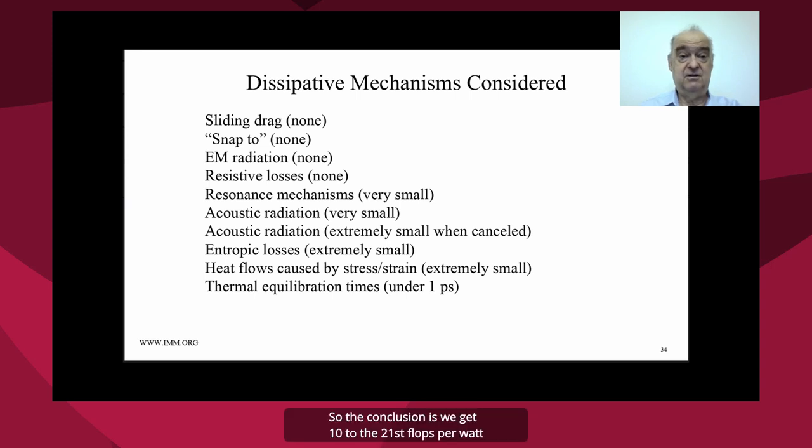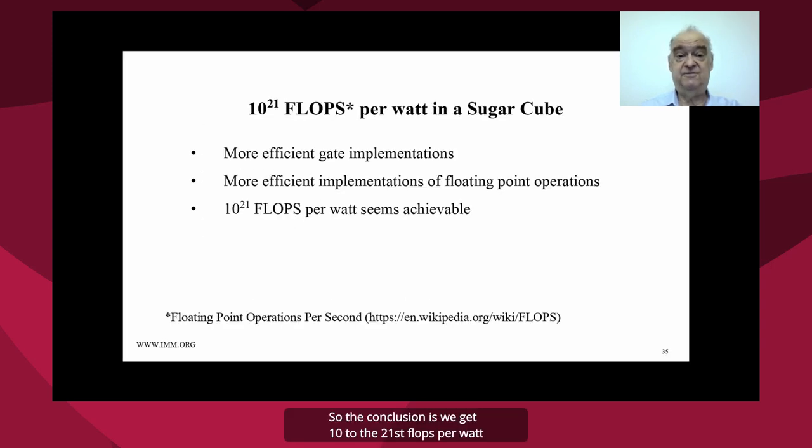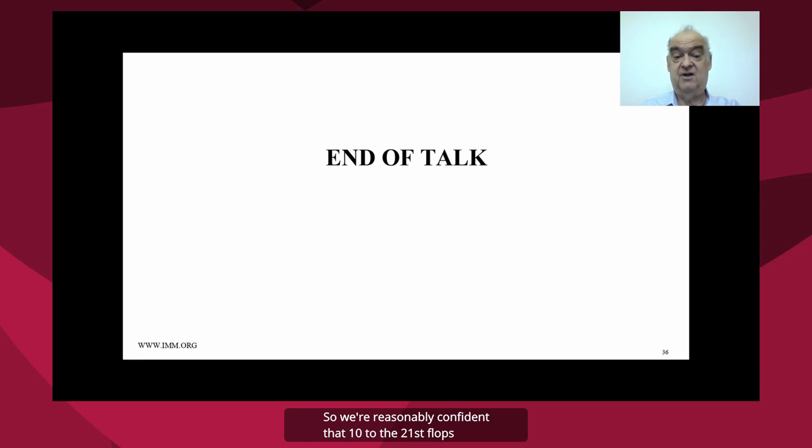So the conclusion is we get 10 to the 21st flops per watt in a sugar cube. And it should be possible to get more efficient gate implementations and more efficient implementations of floating point operations. So we're reasonably confident that 10 to the 21st flops per watt is achievable. And that is the end of the talk. Thank you very much.